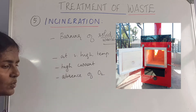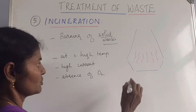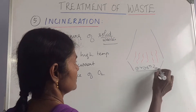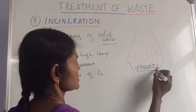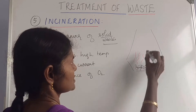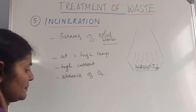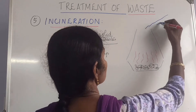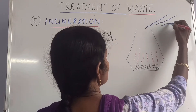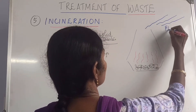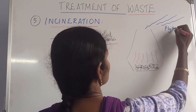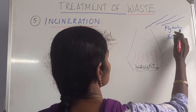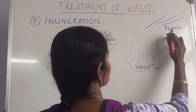So what happens is, when you have solid waste and you are burning it at high temperatures, it gives a lot of things like fly ash, sulfur dioxide and other gases.